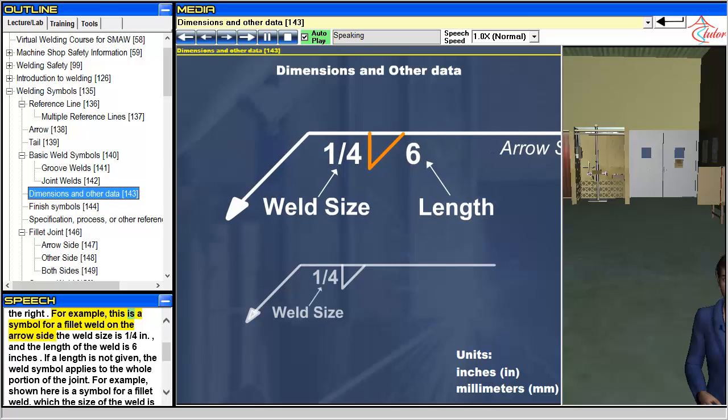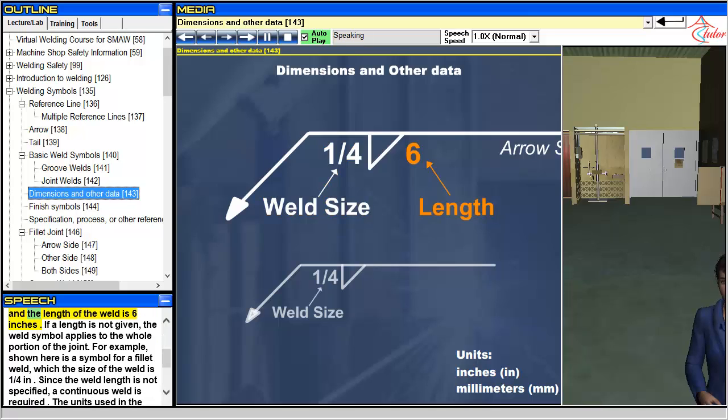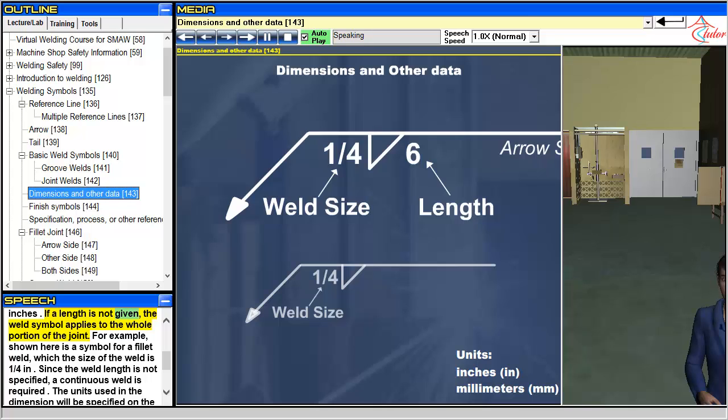For example, this is a symbol for a fillet weld on the arrow side. The weld size is a quarter inch, and the length of the weld is six inches. If a length is not given, the weld symbol applies to the whole portion of the joint.